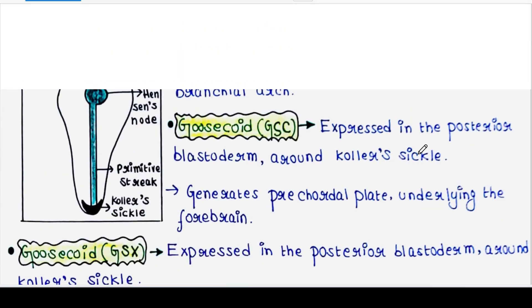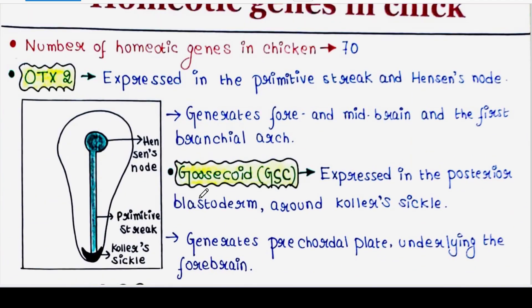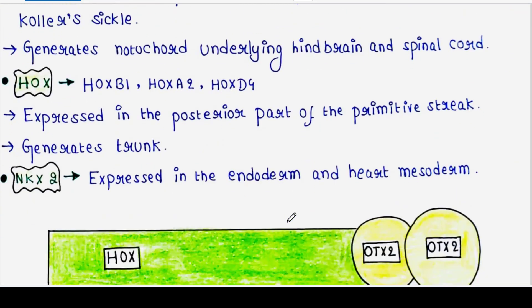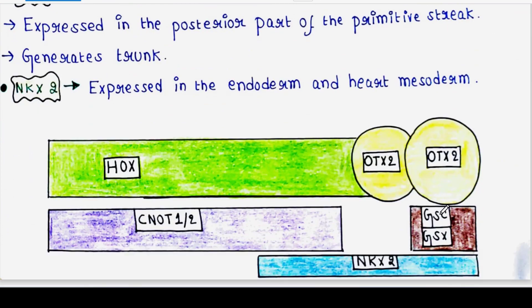Next is goosecoid GSC. This gene is expressed in the posterior blastoderm around Koller's sickle. It generates pre-chordal plate underlying the forebrain.